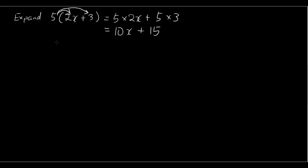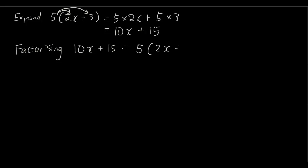Ok, so when you're factorizing, factorizing 10x plus 15 is simply taking out the highest common factor and putting it at the front — so 5 bracket (2x + 3). Factorizing is just the opposite of expanding: when you expand you get rid of the brackets, and when you factorize you put it back into the brackets. So if you write down this as the answer then you have just factorized it.